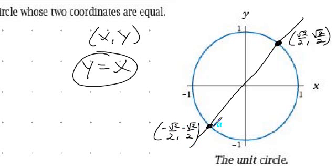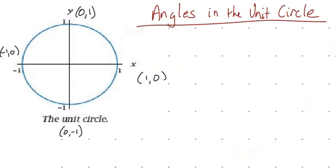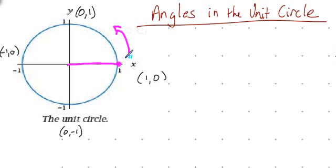That line y equals x corresponds to an angle of 45 degrees, or pi over four. I measure angles on the circle starting with the positive horizontal axis, which is from (0,0) to (1,0). A positive angle is always measured in the counterclockwise direction. For instance, measuring the angle from endpoint (1, 0) to (0, 1), I start at the positive x-axis and go counterclockwise to the positive vertical axis.